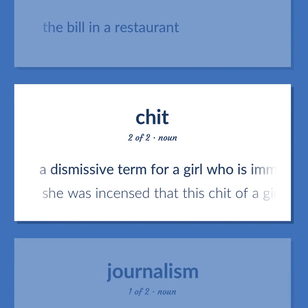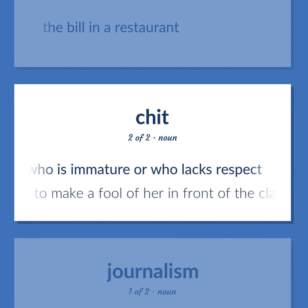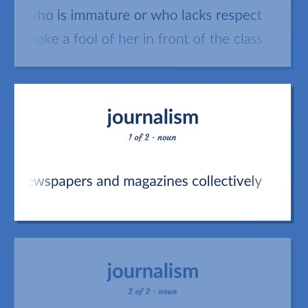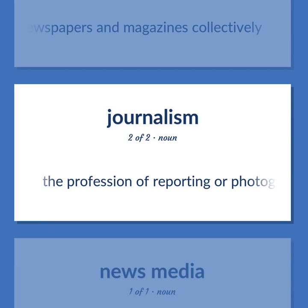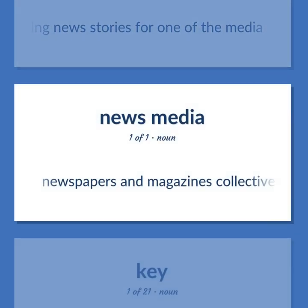CHIT: A dismissive term for a girl who is immature or who lacks respect. Example: She was incensed that this chit of a girl should dare to make a fool of her in front of the class. PRESS: Newspapers and magazines collectively. The profession of reporting or photographing or editing news stories for one of the media. Newspapers and magazines collectively.